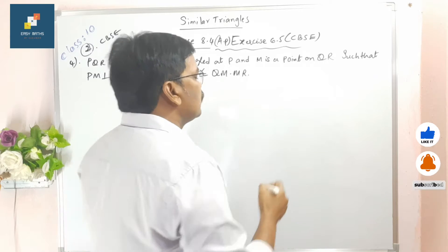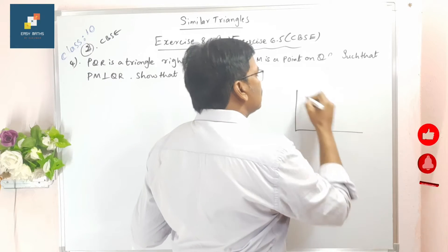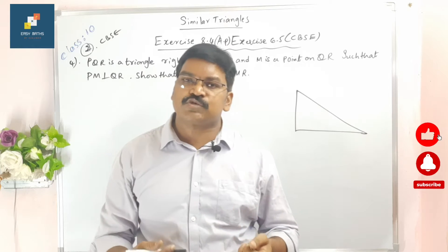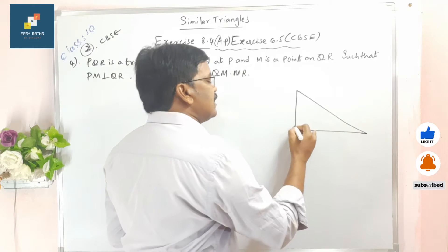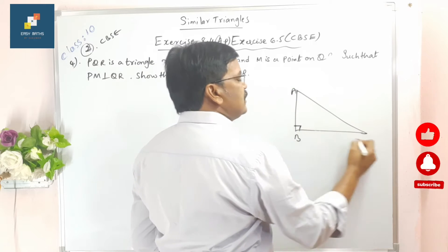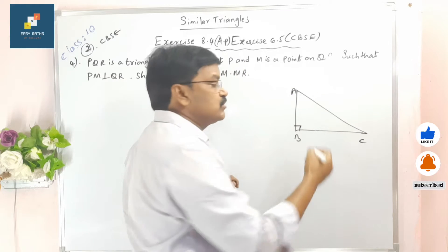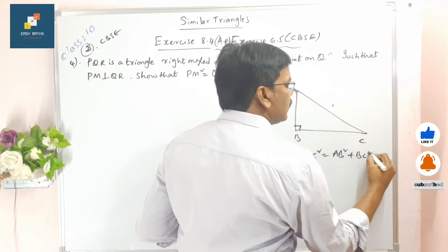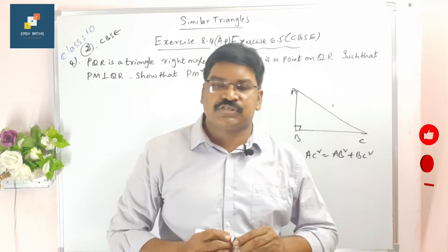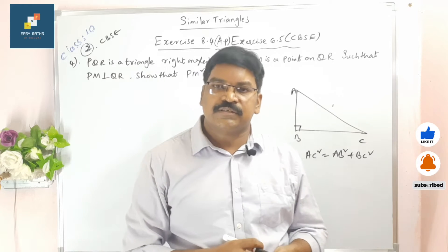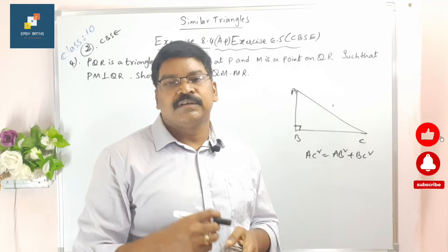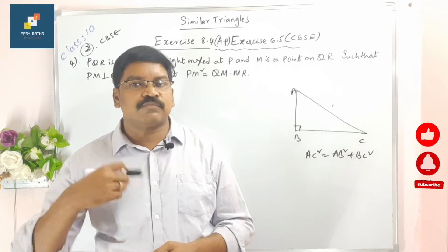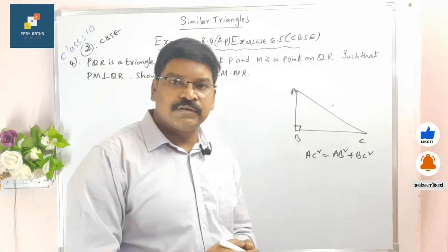What is Pythagoras theorem? How do you prove the Pythagoras theorem? What is the statement? In a right angle triangle, the square of hypotenuse is equal to sum of the squares of the other two sides. That means this is a right angle here — ABC is a right angle triangle, angle B is 90 degrees, this is the hypotenuse. Coming to the converse: in a triangle, if the square of one side is equal to the sum of the squares of the other two sides, then the angle opposite to the first side is the right angle. That is the converse of Pythagoras theorem.